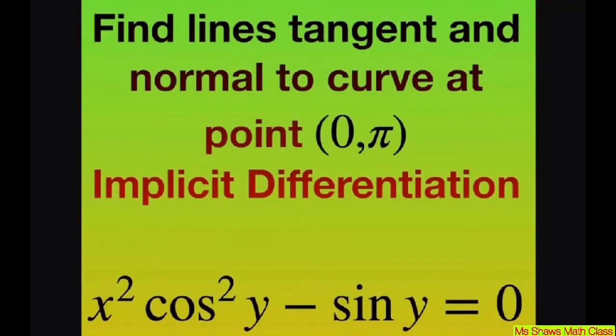Hi everyone. We're going to find lines tangent and normal to the curve at point (0, π). We have x² cos²(y) - sin(y) = 0.